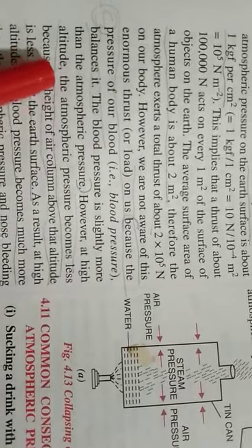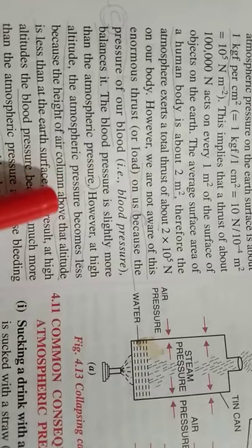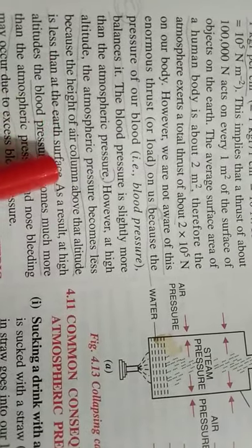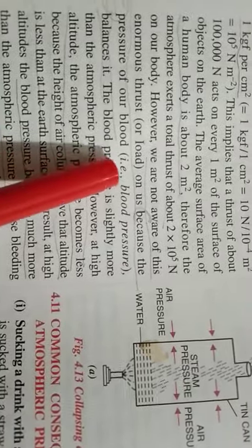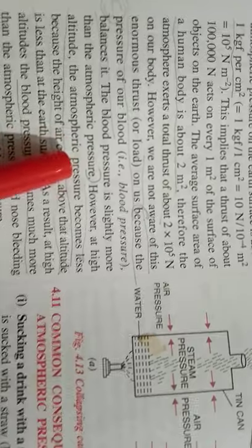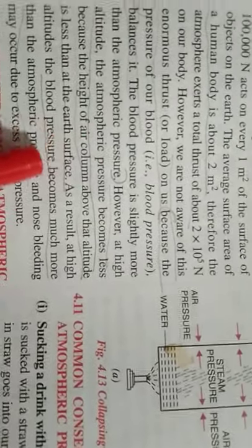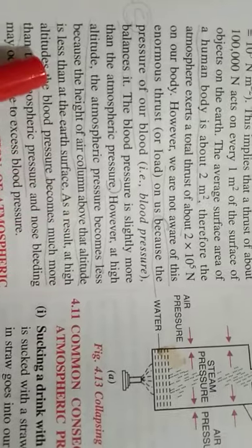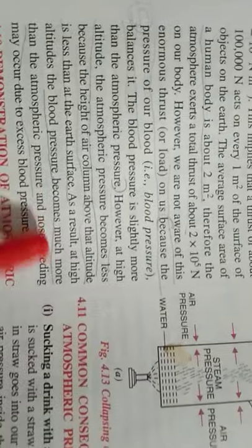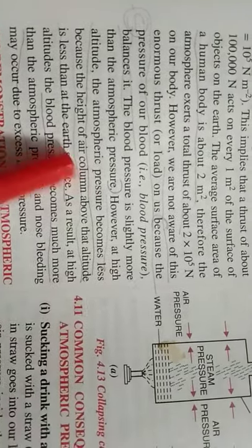However, at high altitudes, the atmospheric pressure becomes less because the height of air column above at altitude is less than at the earth's surface. As we go higher, atmospheric pressure decreases and the body's internal pressure increases. As a result, at high altitudes, the blood pressure becomes much more than the atmospheric pressure and nose bleeding may occur due to excess blood pressure.